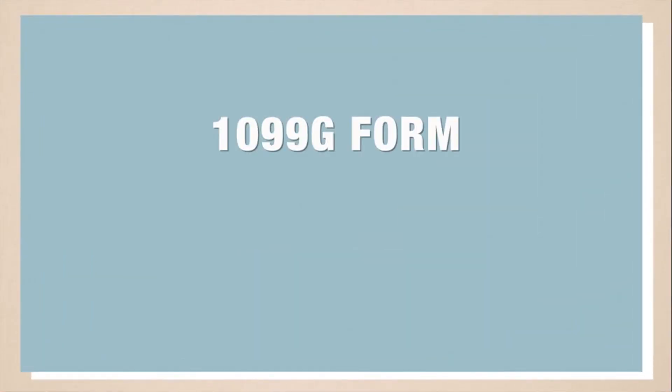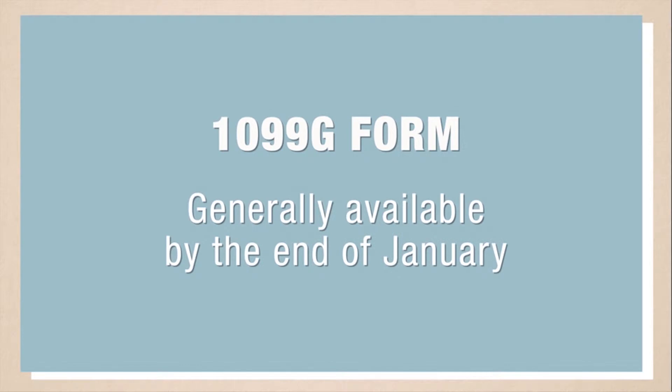You can use the online claim system to find information about how much you received in benefits and how much, if any, state and/or federal taxes were withheld. The form containing tax information, called the 1099-G form, is generally available by the end of January.